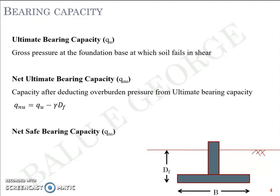There is also a term called net safe bearing capacity, represented by q_ns, where q_ns = q_nu / Factor of Safety. The factor of safety in geotechnical engineering is usually in the range of 2.5 to 3, because soil is highly unpredictable unlike concrete. In concrete, a factor of safety of around 1.5 is used, whereas for soil — since its properties are not easily quantifiable — a factor of safety of 2.5 to 3 is assigned.